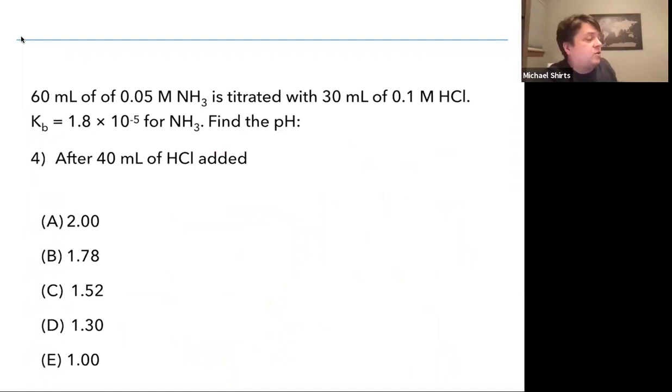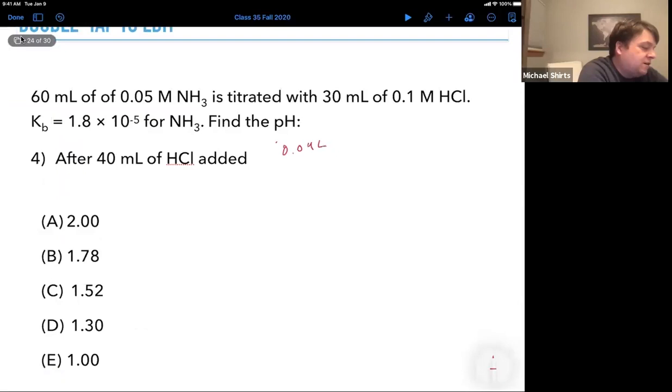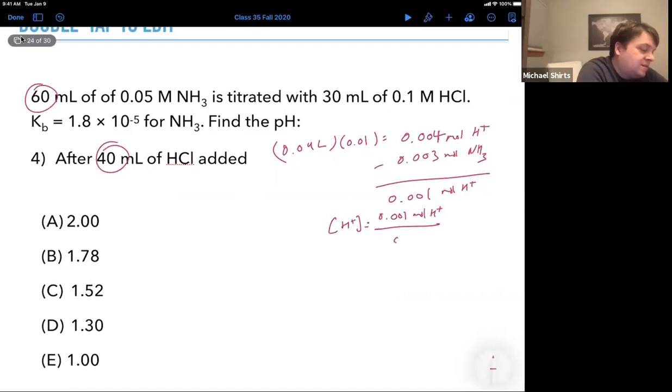We only have one more situation to consider. Now let's look at after the equivalence point. We have 40 mL of HCl added, but we can just ignore anything that the ammonium is doing. The only thing that matters is how much excess H⁺ there is. We had 0.04 liters times 0.1, which gives us 0.004 moles of H⁺, and we have 0.003 moles of base. Subtracting that out, we have 0.001 mole excess H⁺. What's the concentration? We added 60 and 40 together, so the concentration of H⁺ is 0.001 mole divided by 0.1 liter, which is 0.01 molar, and that's pH 2.0.